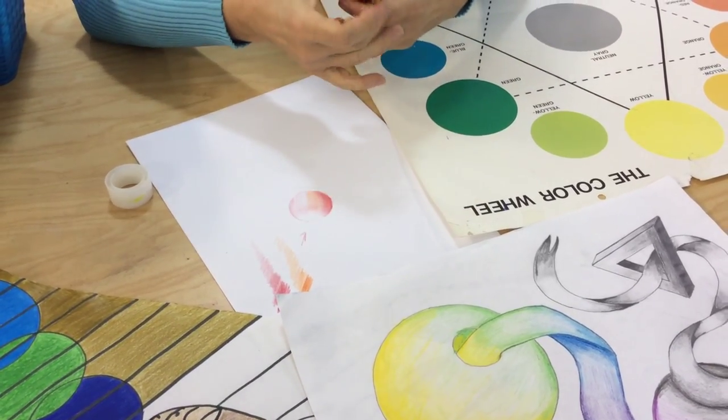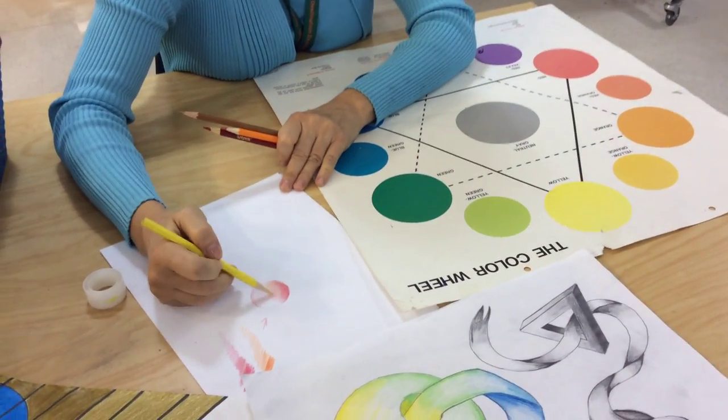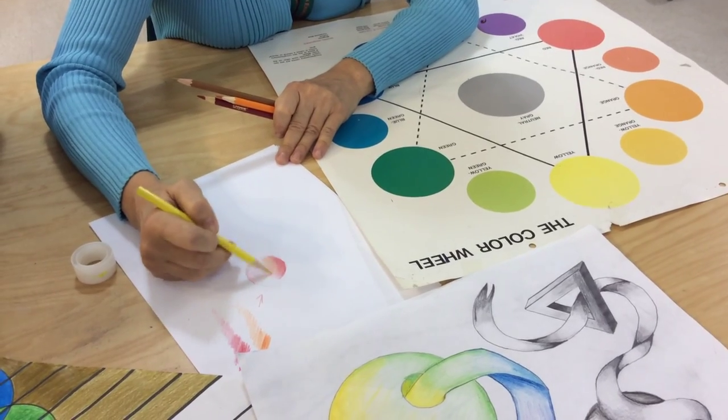I could also go from the orange to the yellow, going to the right of the color wheel, and add another color.